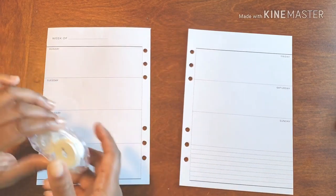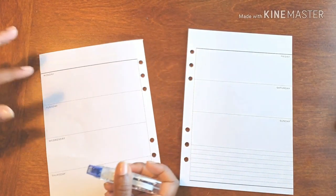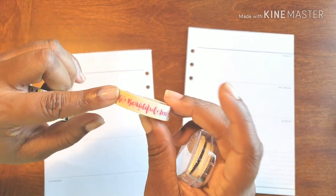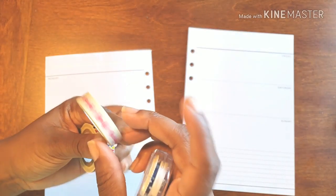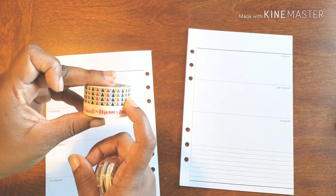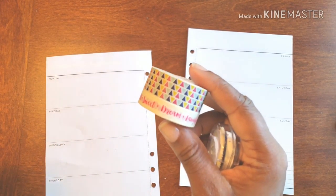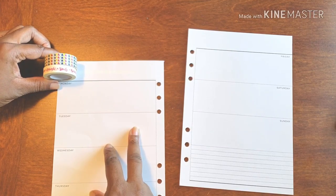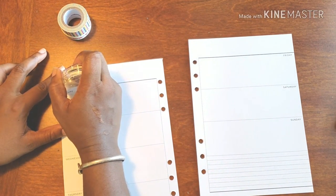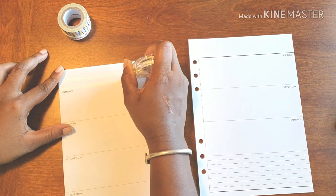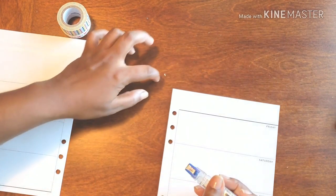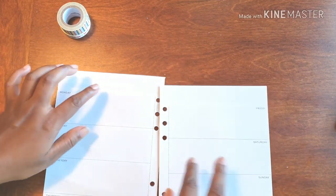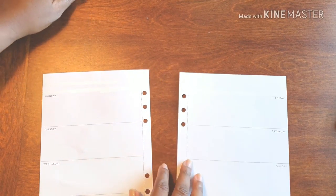Let's get a flat surface that we can work on and get to work. First and foremost we're going to get rid of the week of, because I'm going to put down this beautiful washi. Alright, we're set, ready to go. Let's get the washi popping.